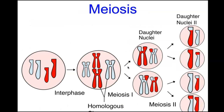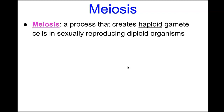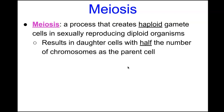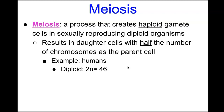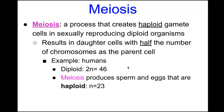Let's look at meiosis. Meiosis is similar to mitosis but they are two distinct types of cell division. Meiosis is a process that creates haploid gamete cells in sexually reproducing diploid organisms, resulting in cells with half the chromosome number of the parent cell. For humans the diploid number is 2n = 46, and meiosis produces sperm and egg cells where n = 23.